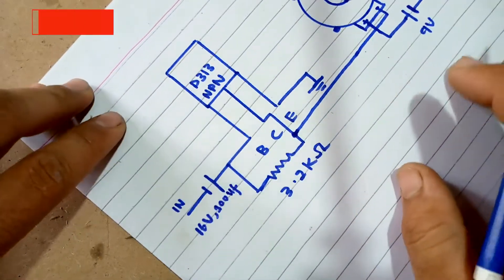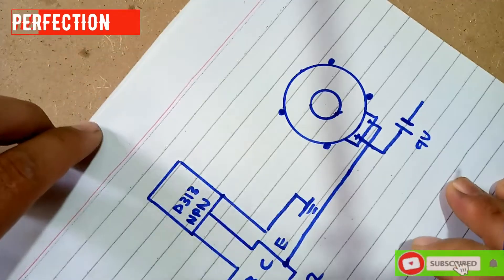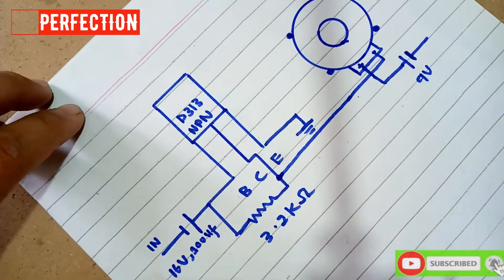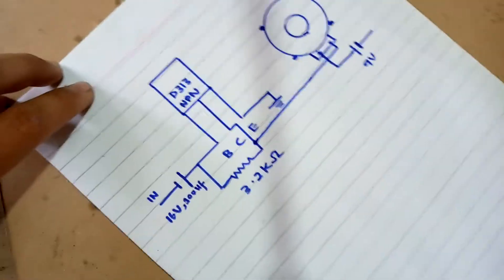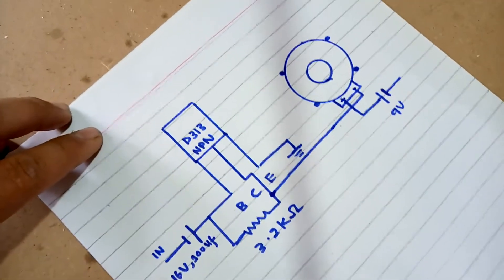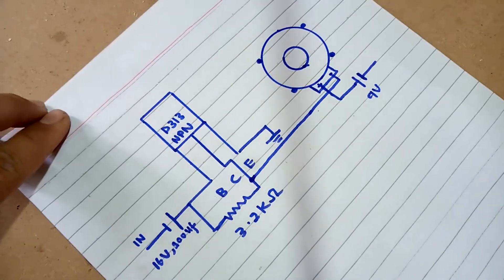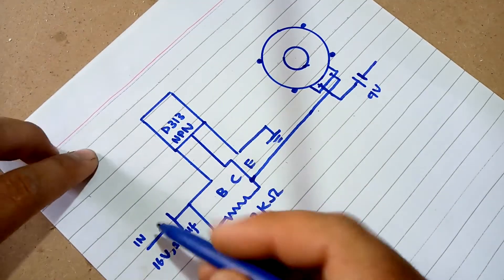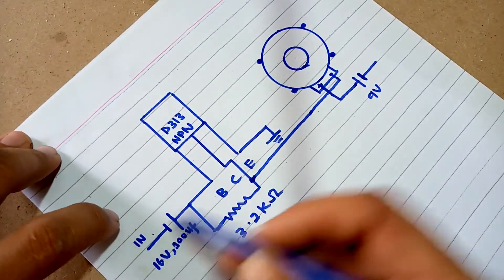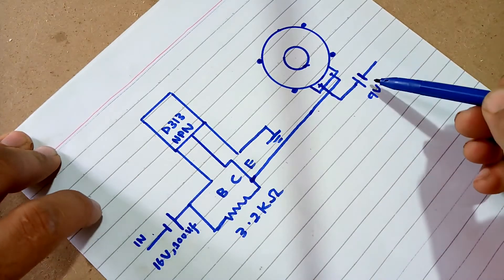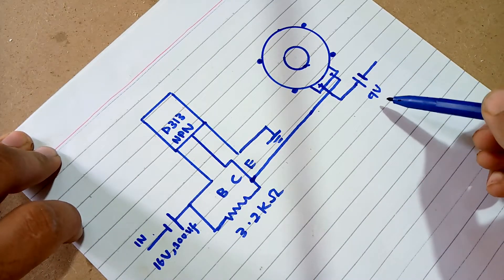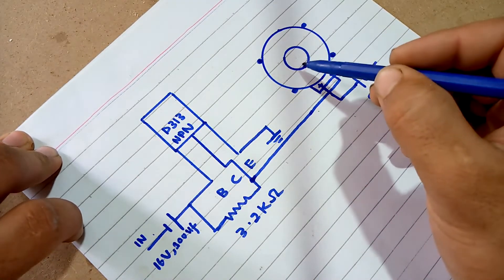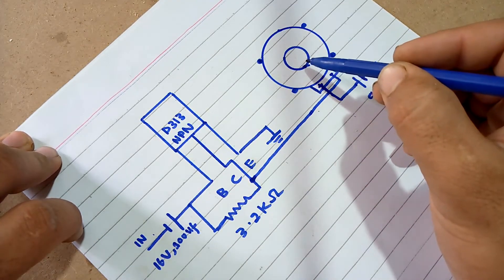Now the circuit diagram is complete. As you can see, this is the audio input, this is the power source, and this is the output source.